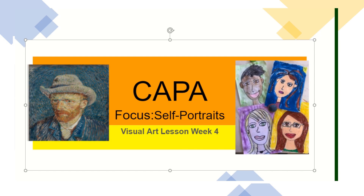Last week we appreciated some of his artworks and had a go at drawing our own sunflower. Today we are going to look at something else he was famous for painting — himself. He painted many pictures of himself and these are called self portraits. Today we are going to look at some of these and have a go at creating our own self portrait, which means you are going to learn how to draw yourself. So let's get started.